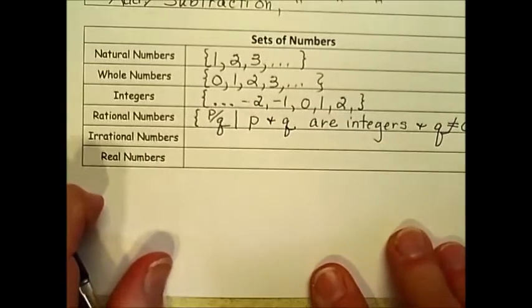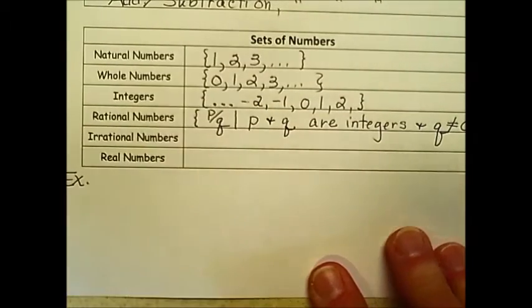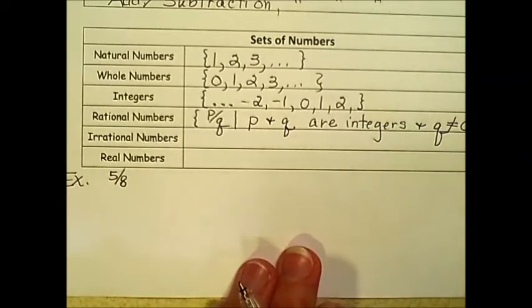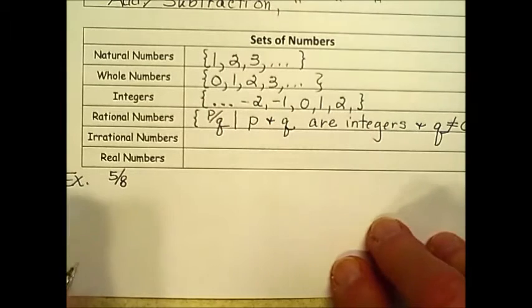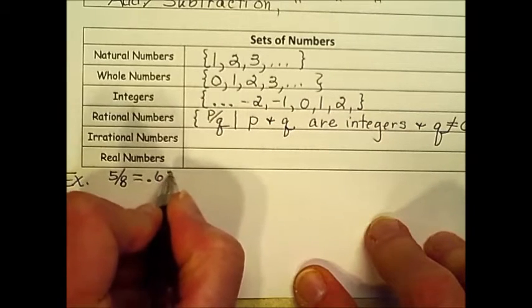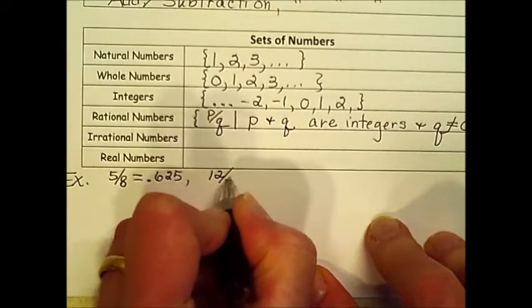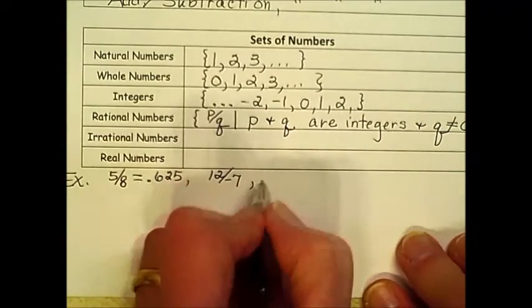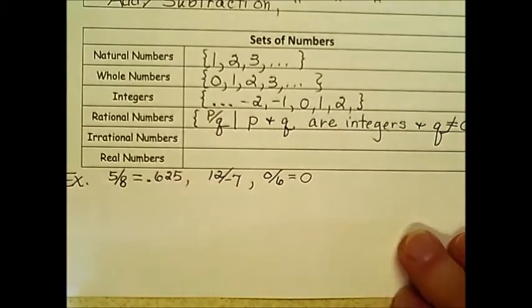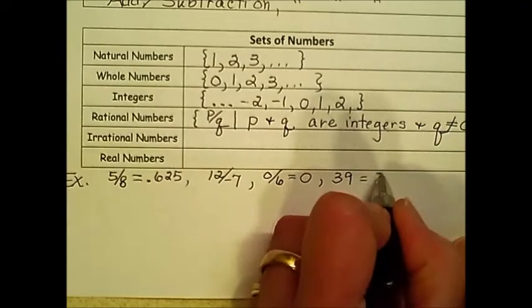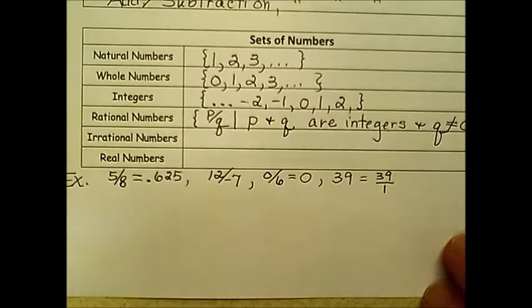Let's look at some examples of rational numbers. Rational numbers can be fractions, and not always the case. So we end up with 5 eighths. We can come up with the decimal equivalency, .625. We could have an improper fraction, and it could be negative. So negative 12 sevenths would work. We could put zero over 6, which would simplify to a zero. And for that matter, 39 could be considered a rational number, because although we wouldn't write it this way very often, we can express it as a ratio, 39 over 1.